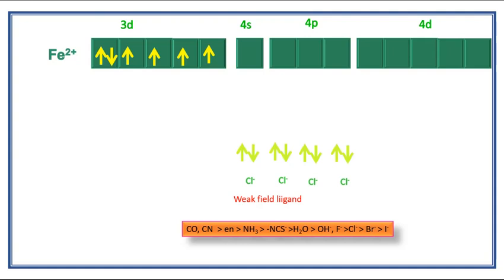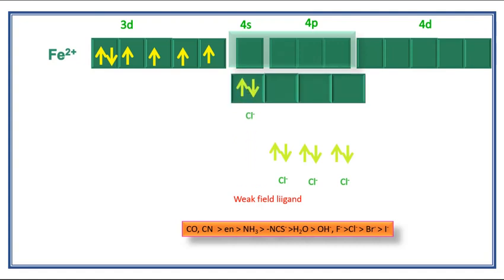The central metal ion can overlap only 1 4s orbital and 3 4p orbitals hybridized together gives 4 sp3 hybridized orbitals. Next these 4 ligands linearly overlap with 4 coordinate bond with the empty central metal ion forming sp3 hybridization and its geometry is tetrahedral.